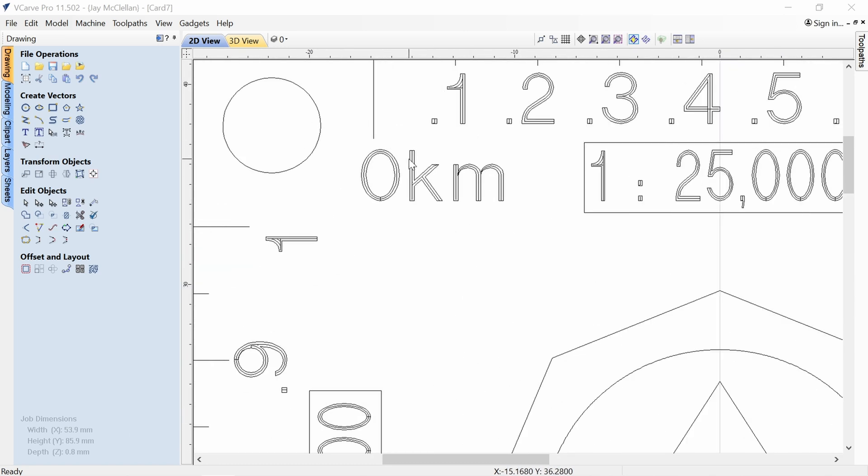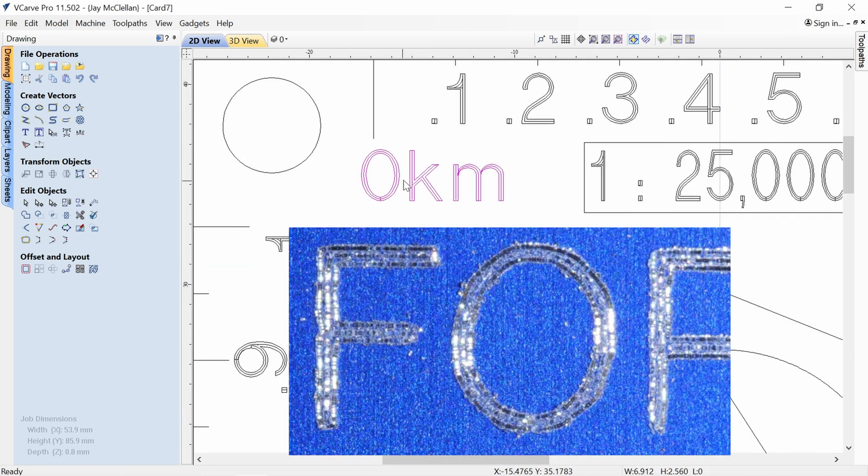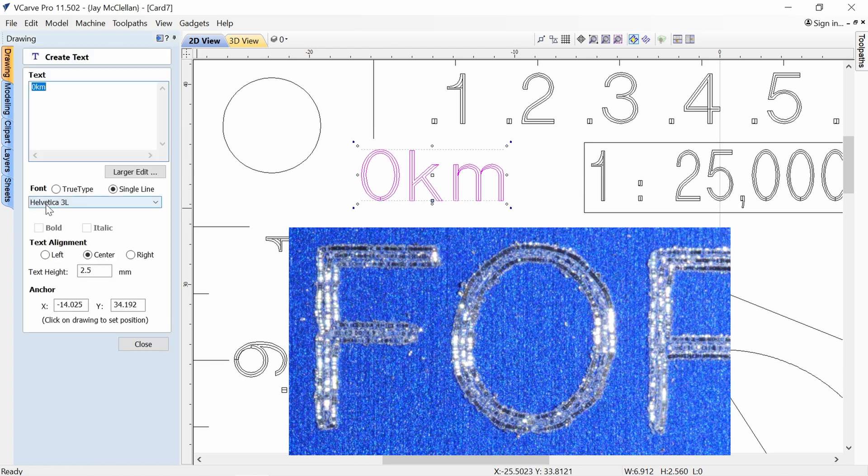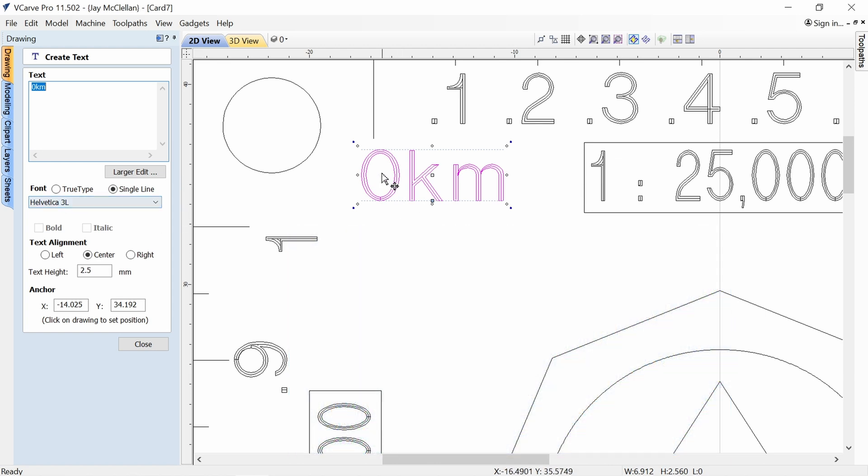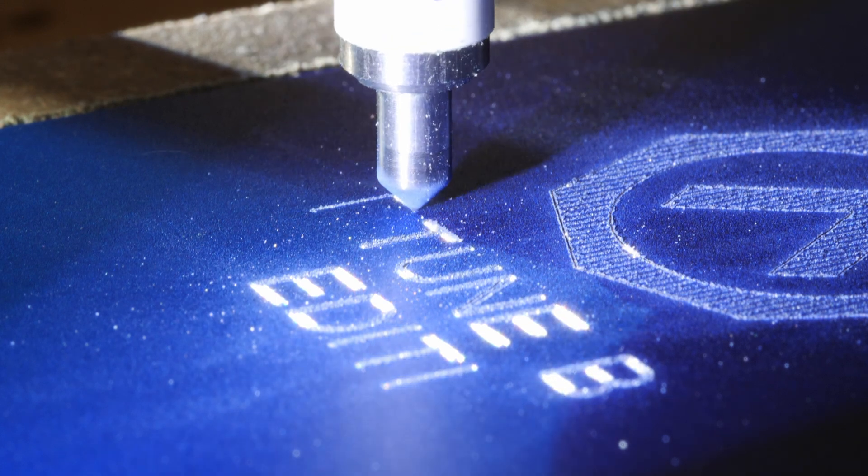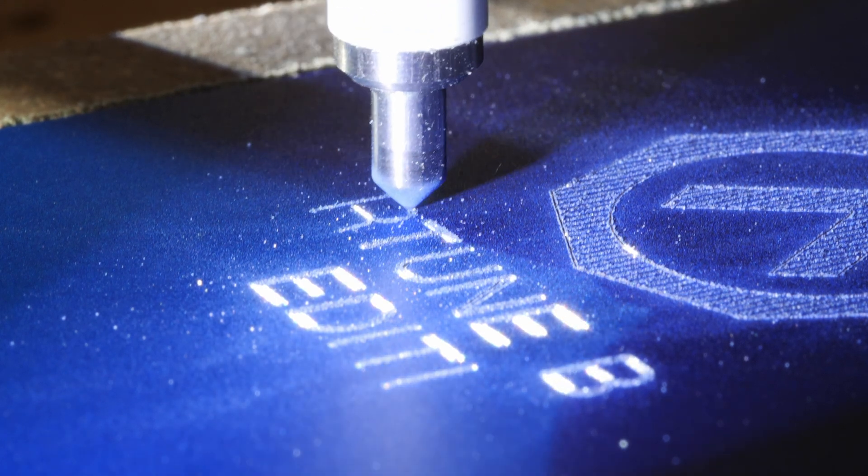The tick marks are all just vectors, and then the text is just using the VCarve text facility. If I zoom in on the text, you can see that each character stroke is three lines, and that's because I used this three-line. It's a little bit misleading. It has true type fonts or single line fonts. So this is a single line font, but the 3L actually means it's really a three-line font, which means each stroke has the outer edges and then the center, and that gave the best result when engraving.